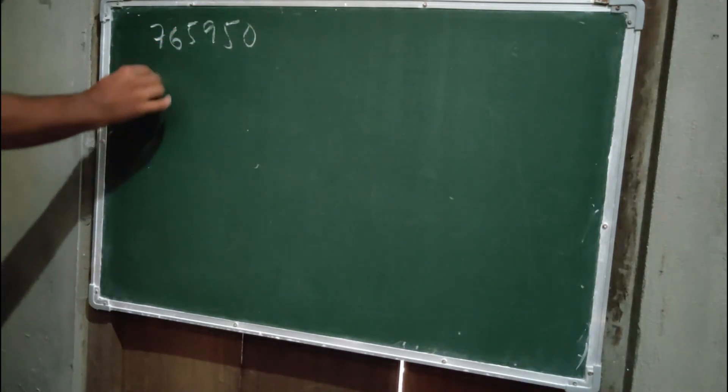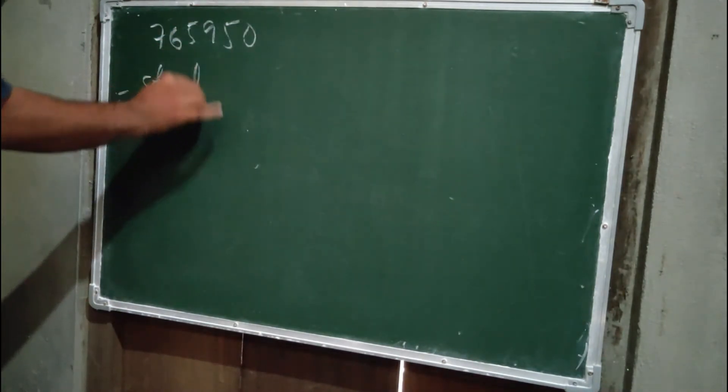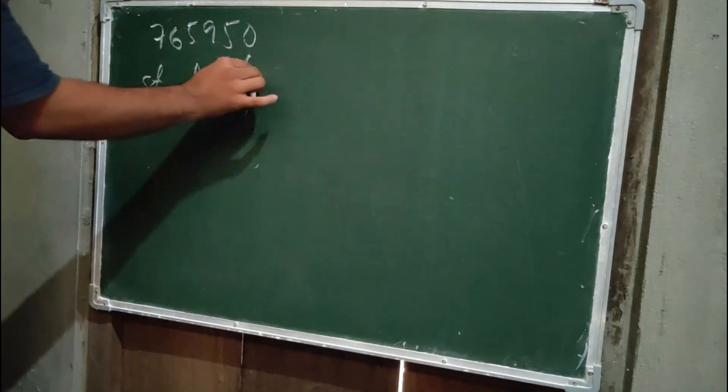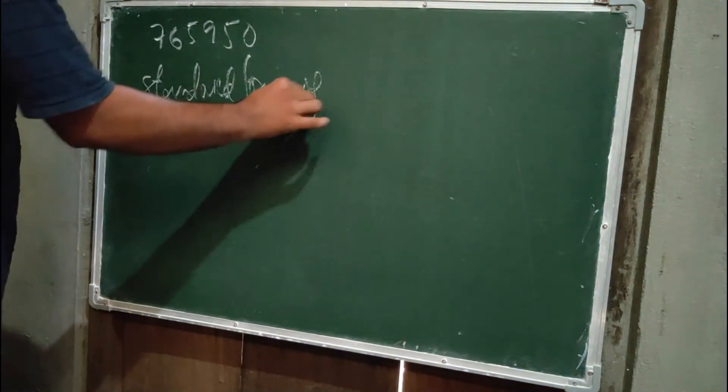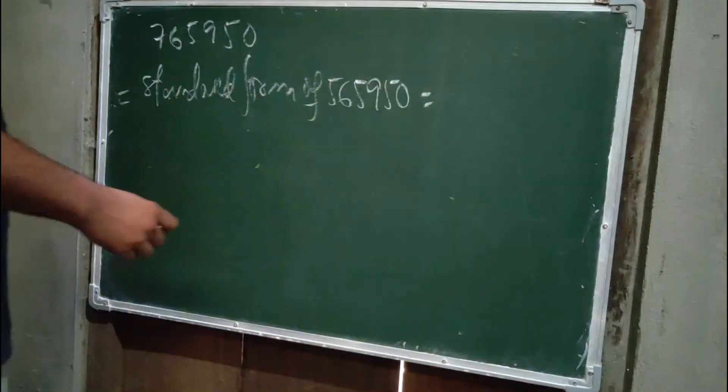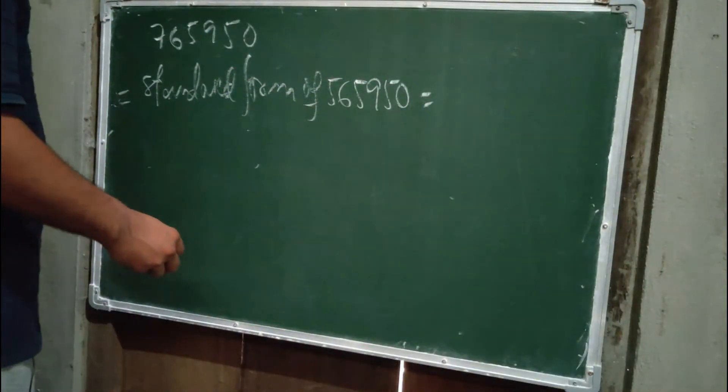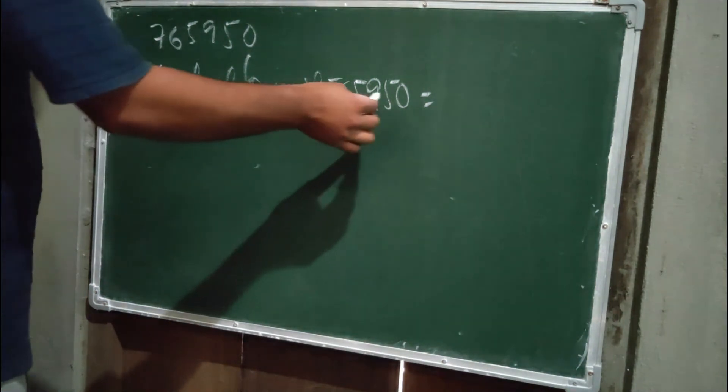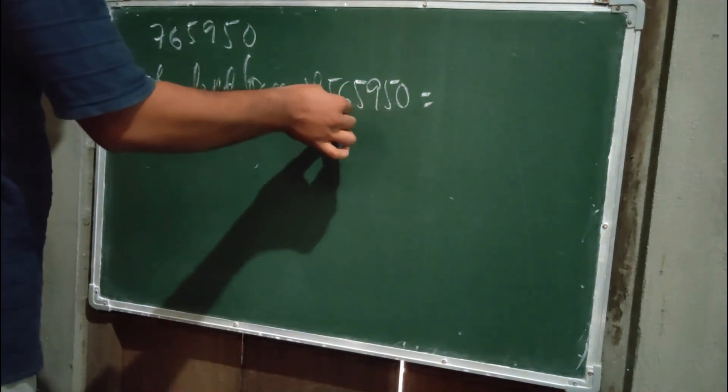Standard form of 765950 is equal to... Now listen, count: 1, 2, 3, 4, 5 - we'll move the point 5 digits.